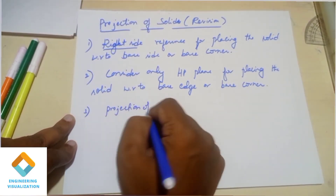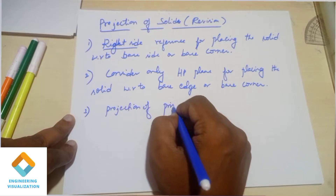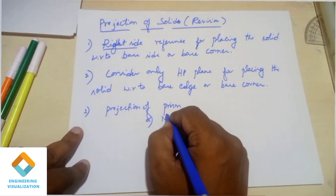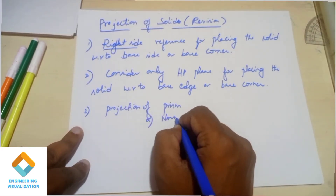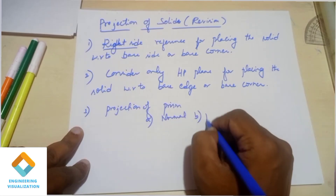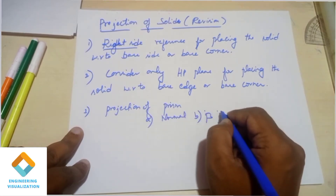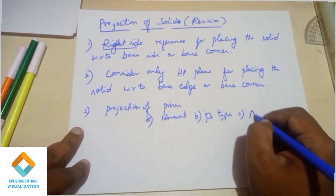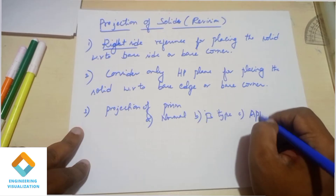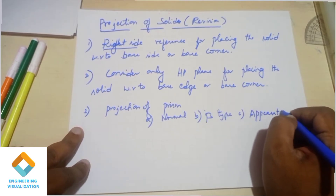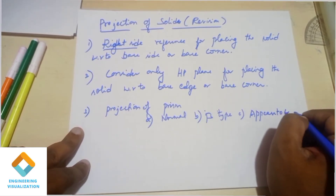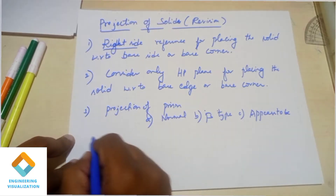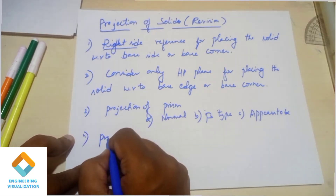Next, projections of prism: projection of prism has S-type problems, normal type problems, bit angle, and appears-to-be. There are 3 problems in projection of prism: normal, bit angle, and appears-to-be. Same plane cell problem, but concepts are different.